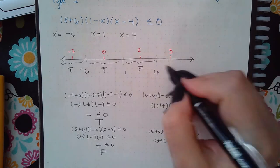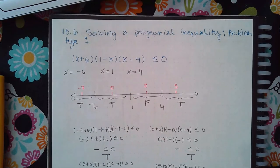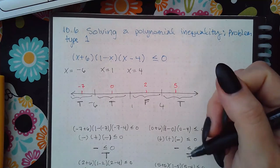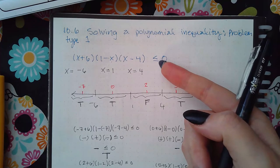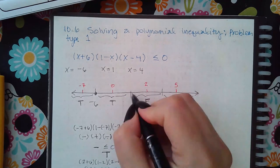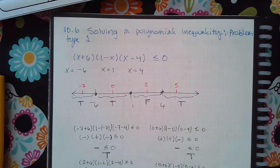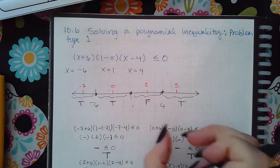Now we have to consider whether this inequality had a bar or not. This inequality does have a bar, so it will have a solid dot here, a solid dot there, and a solid dot there. So when I go to write my intervals I would write these two intervals and this interval as my final answer. Only the true intervals will be part of my final answer.